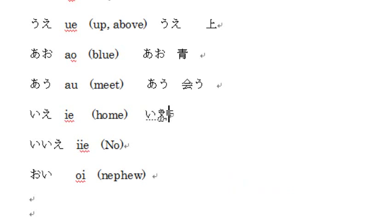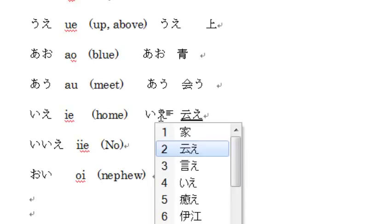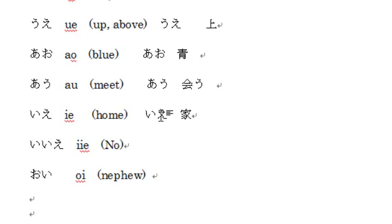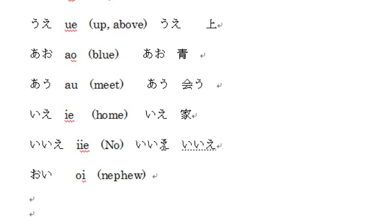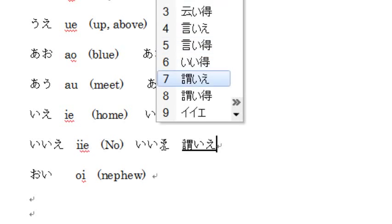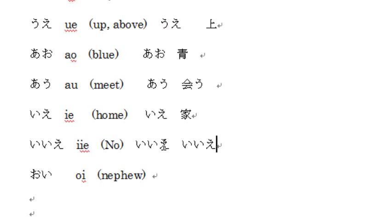'Ie' (いえ) is typed 'i' then 'e'. Press Enter to confirm. If you want the kanji for 'ie' meaning house or home, press the space key once or twice to see options — for house or home, it's number 1. There is also 'iie' (いいえ) which means 'no' in English, but 'iie' doesn't have a kanji for that meaning — normally we use hiragana for 'iie'.